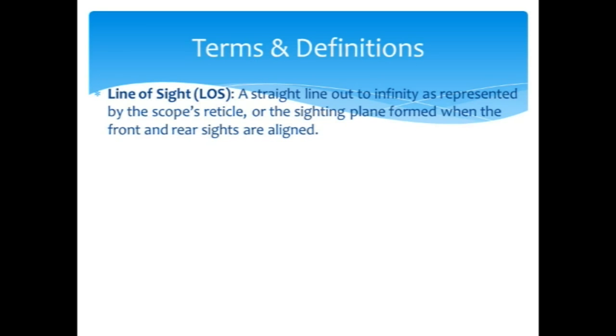The line of sight is if you pick a point at whatever distance, 100, 200, 500, 10 million yards, whatever, and you look at it, that line from your eyeball to the point you're looking at is our line of sight.